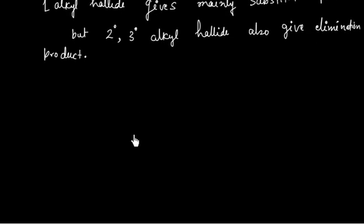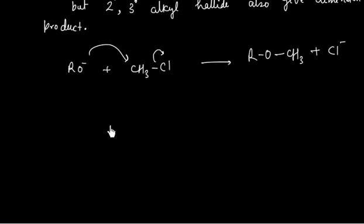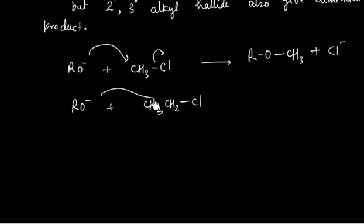For example, if RO⁻ reacts with CH₃Cl, mainly the SN2 product ROCH₃ will form. Or if we have CH₃CH₂Cl, again we will have mainly the substitution product.